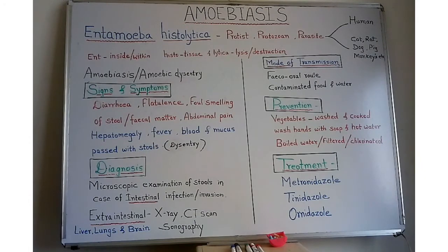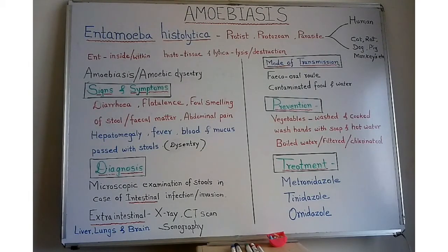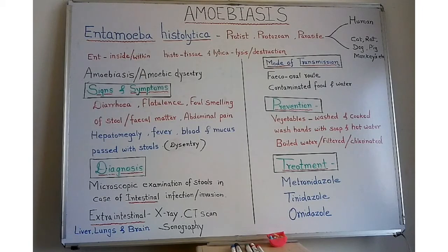For diagnosis, there are two types. The first is intestinal infection, for which a stool sample is given for microscopic examination. Unlike most other diseases where blood and urine are the primary samples, for amoebiasis or amoebic dysentery, the stool sample is given for microscopic examination. However, the infection is sometimes not restricted to the intestine.